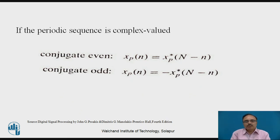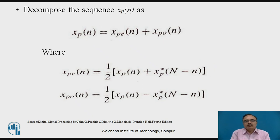If the periodic sequence is complex-valued — up till now we discussed real values — then we divide its even and odd values using conjugates, where x_p((−n))_N equals x_p*(n minus N) for odd values. The decomposition can be represented in terms of even and odd values, shown as x_p(n) equals x_pe(n) plus x_po(n).